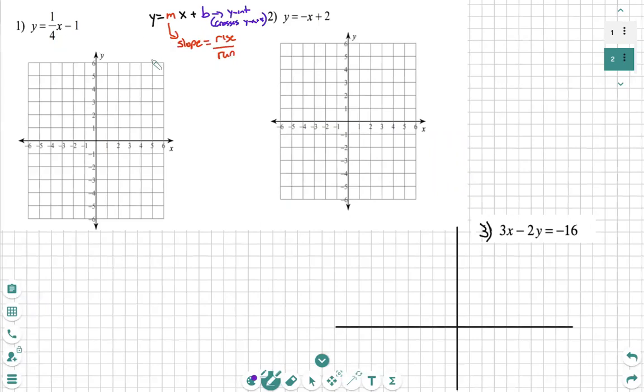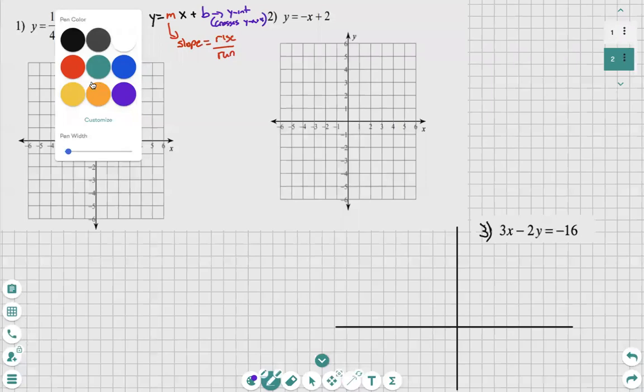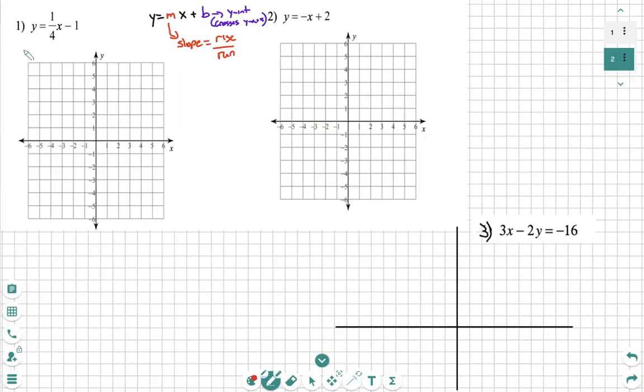So, all we need to do in these first two equations is recognize what we have. First, y equals 1 fourth x minus 1 is the equation given to us. We know that my m is always the number in front of that x. What number is also just attached in front of that x? Another word for it would be a coefficient.